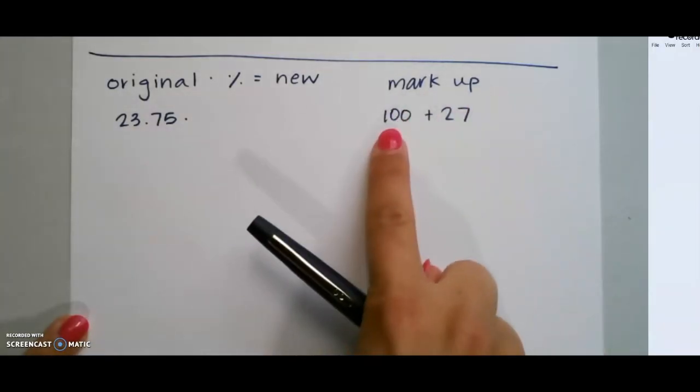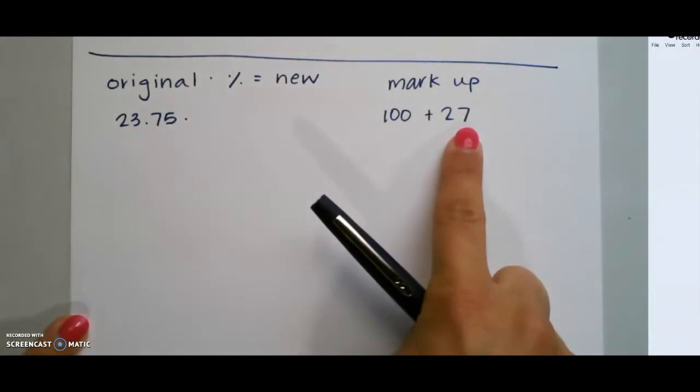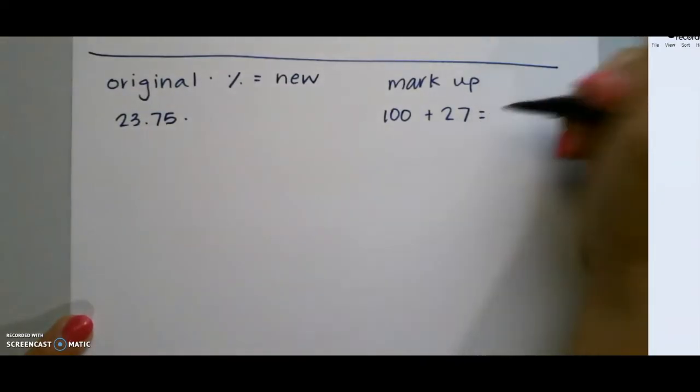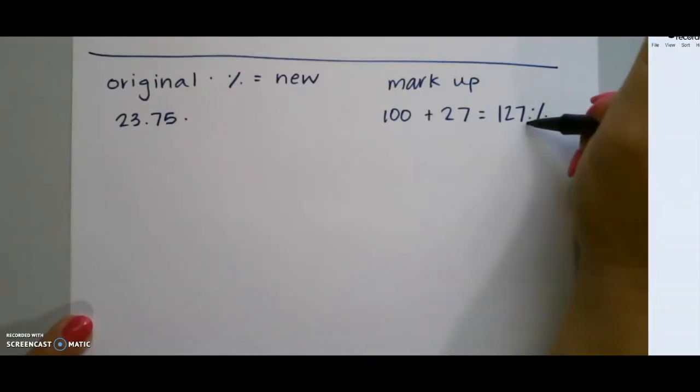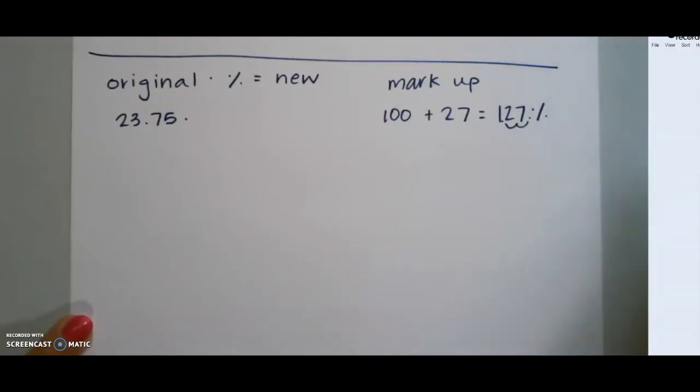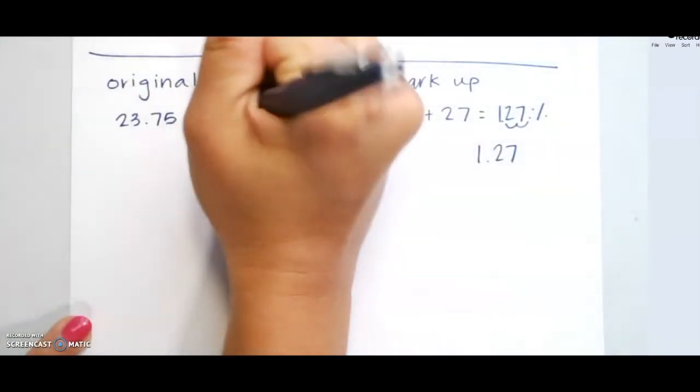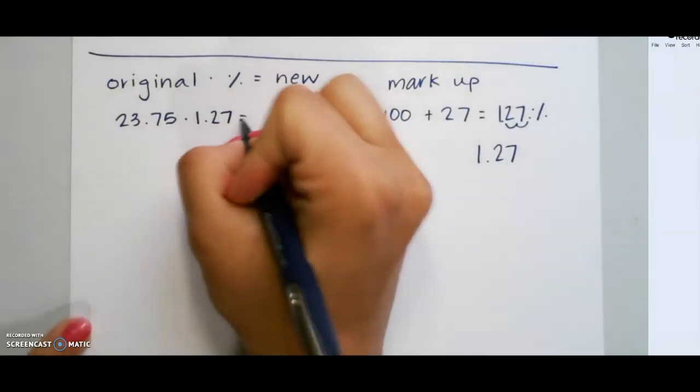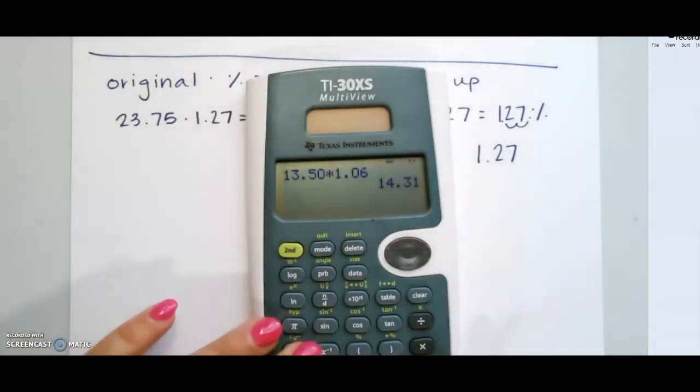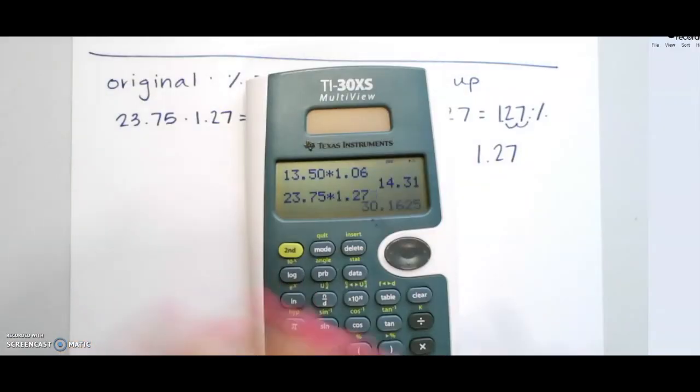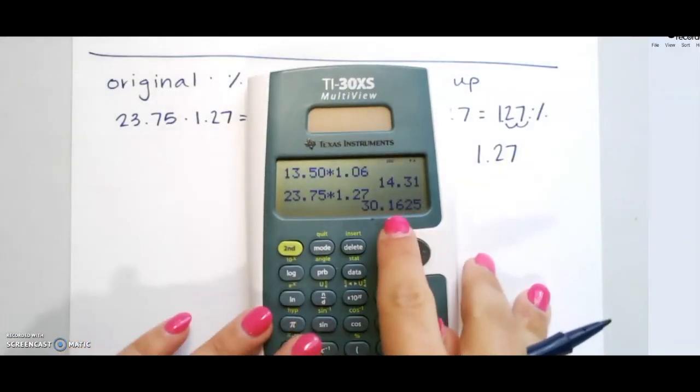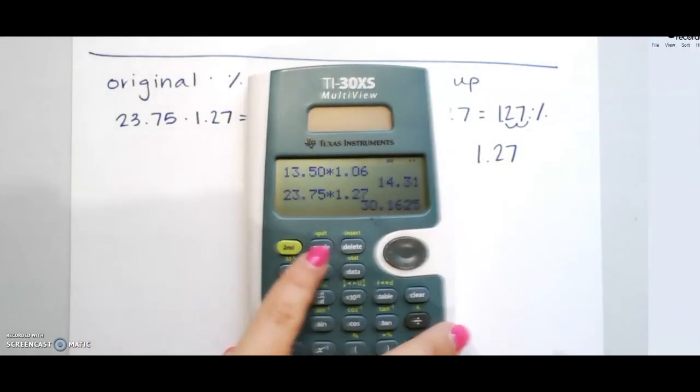Since it's a markup, we're going to add 100% plus 27%, which gives us 127%. We then need to make this a decimal by moving the decimal to the left two places: 1.27 is our markup decimal. We then multiply this, 23.75 times 1.27. So our new price, once we round, would be $30.16.